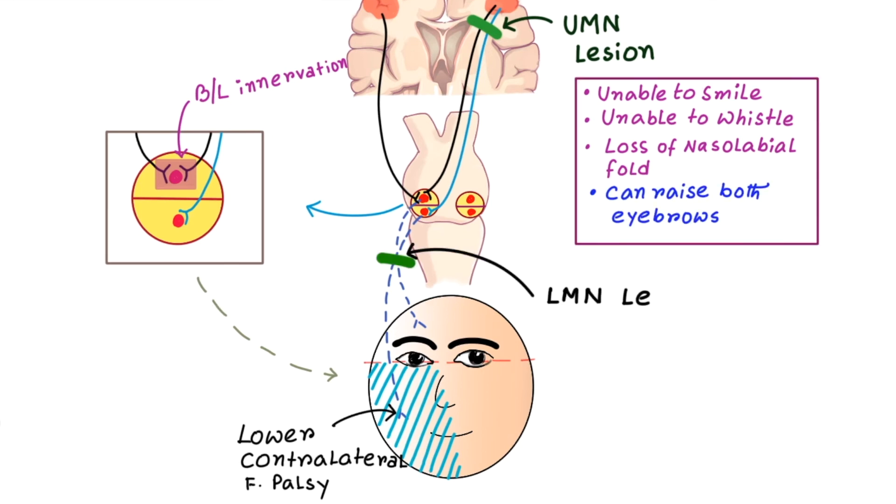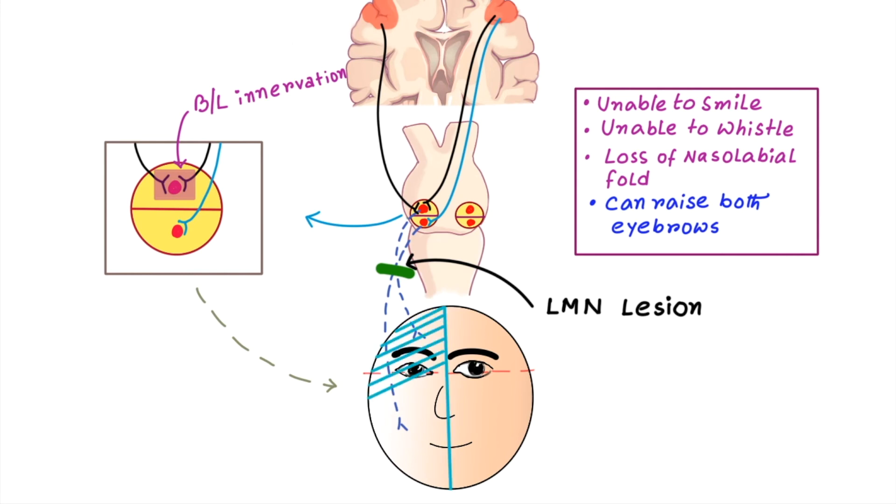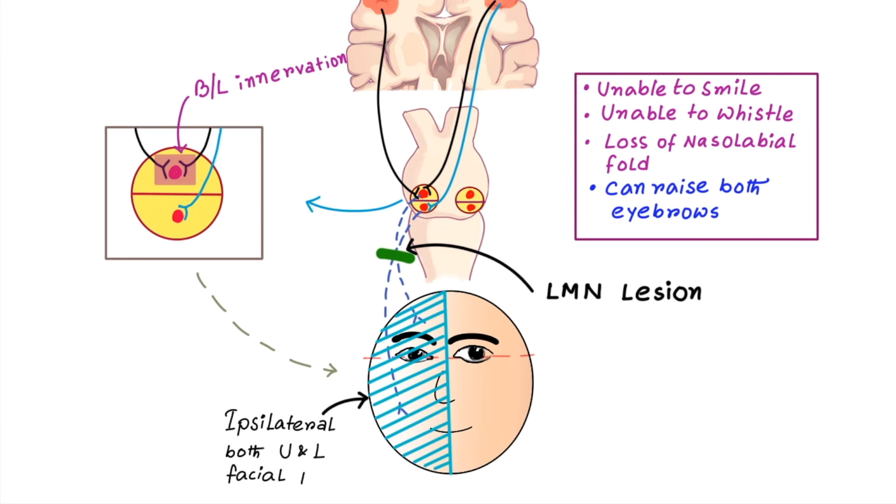Now, let's see what are the findings of lower motor neuron lesion. In that case, there will be ipsilateral paralysis of both upper and lower facial musculature.